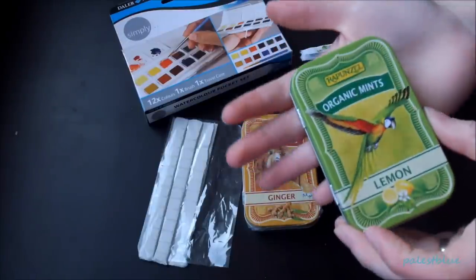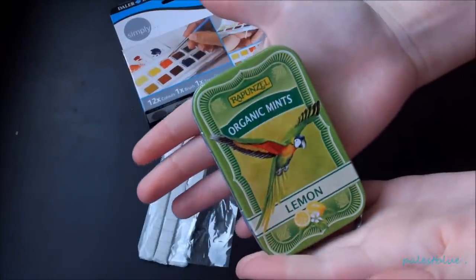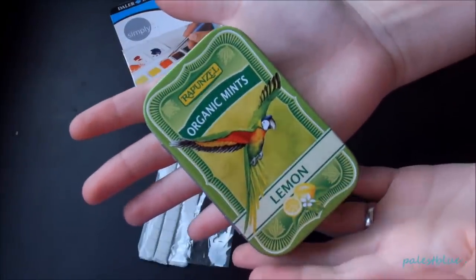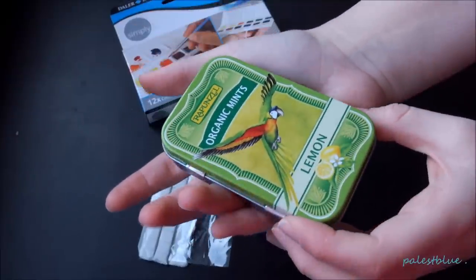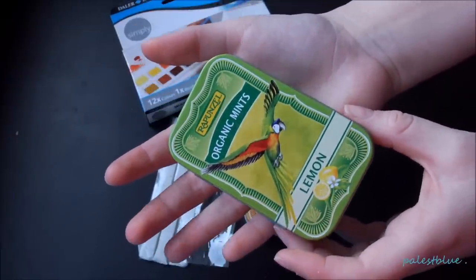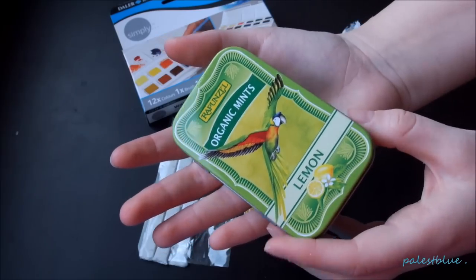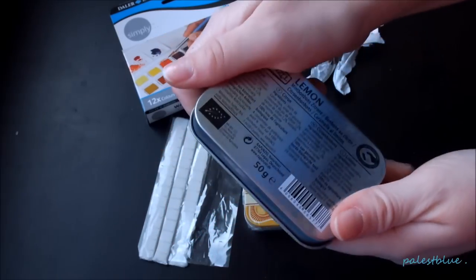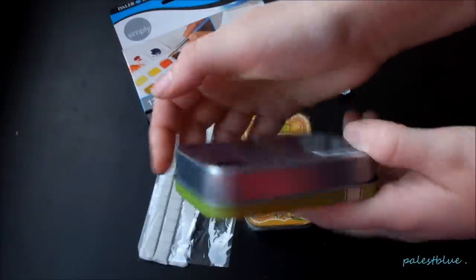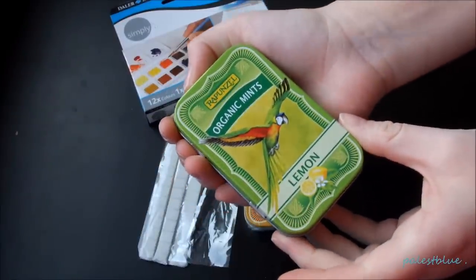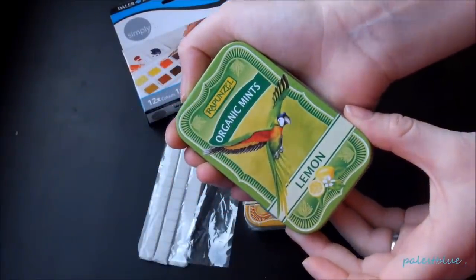Mine is this Rapunzel Organic Mints. And I got these at a Whole Foods store in Germany. You can also order these online. I think they are available on Amazon UK as well. So I guess you will be able to get these wherever you are in the world.